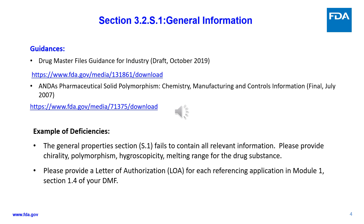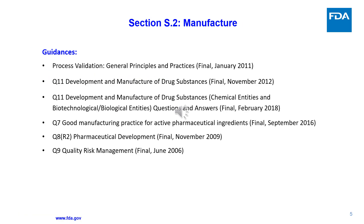Section S.1 guidances: Drug Master File Guidance for Industry, and ICH guidance on pharmaceutical solid polymorphism, chemistry, manufacturing and controls information. Examples of deficiencies: the general properties section S.1 fails to contain all relevant information — please provide chirality, polymorphism, hygroscopicity, and melting range for the drug substance. Please provide a letter of authorization for each referencing application in Module 1, Section 1.4 of your DMF.